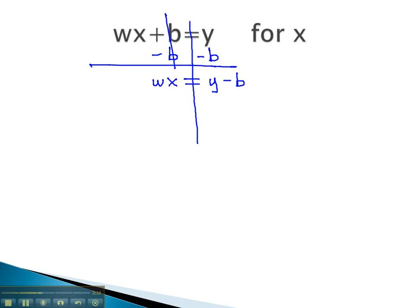Now, to get the x alone, we simply have to do the opposite operation. It's x times w, so we will divide by the variable we want to get rid of on both sides. The x is now alone, and our final answer is the expression y minus b over w.